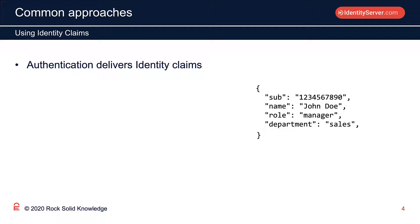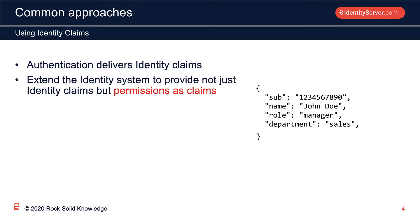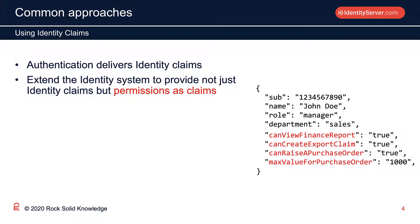Those identity claims can be anything about the user's identity: name, role, department, phone number, date of birth. It's a completely extensible mechanism. Some developers have seen this as an opportunity to put permissions inside those identity claim sets. This allows for some fine-grained control over access requirements — we can just check if a user has a particular permission inside their claim set.